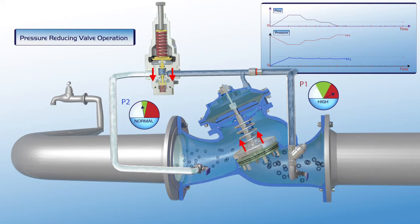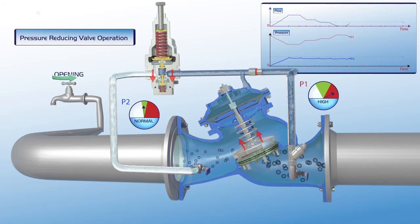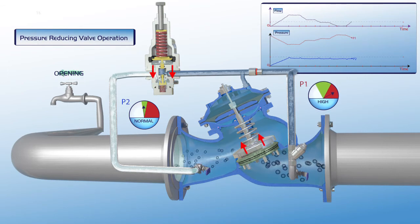When demand increases again, the pilot responds relative to demand level, the plunger moves downwards, the valve gradually opens, and downstream pressure remains stable.